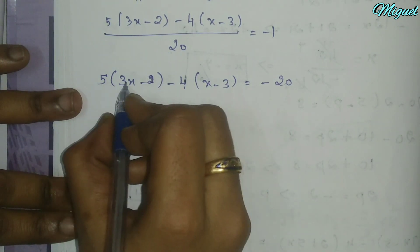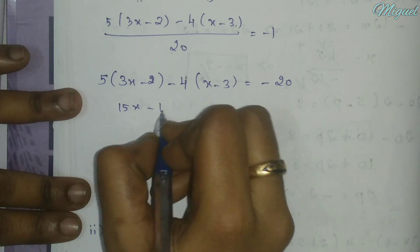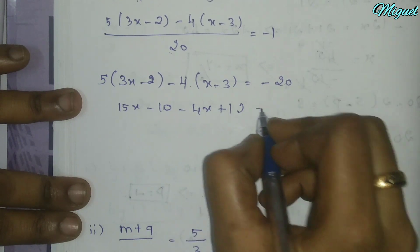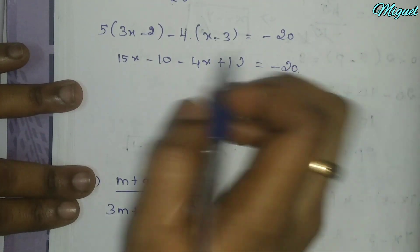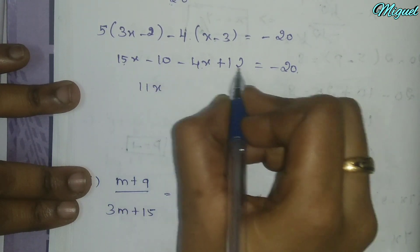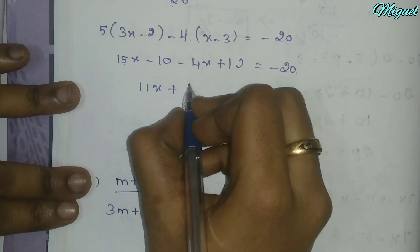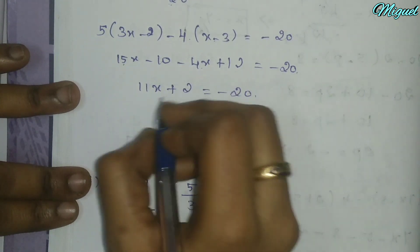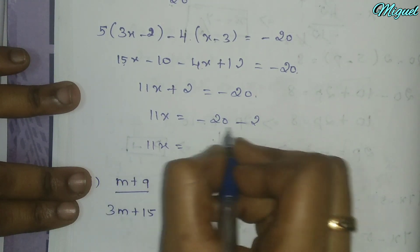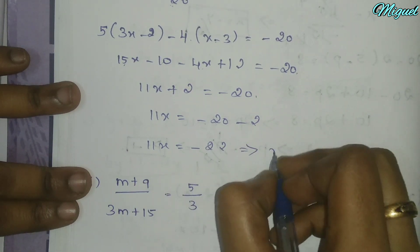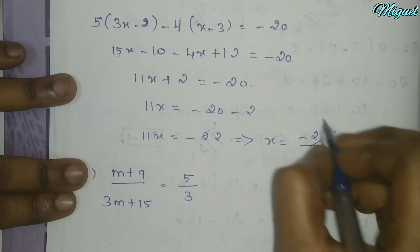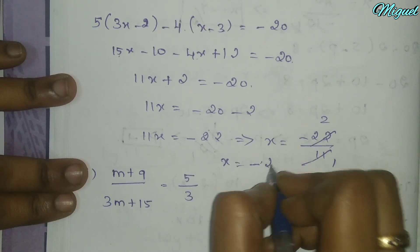Expanding: 5 multiplied by 3x gives 15x, 5 multiplied by 2 gives minus 10, minus 4x, and 4 multiplied by 3 gives 12, minus minus gives plus. So 15x minus 4x equals 11x. Collecting constants: minus 10 plus 12 equals plus 2. So 11x equals minus 20 minus 2 equals minus 22. Therefore x equals minus 22 divided by 11 equals minus 2.